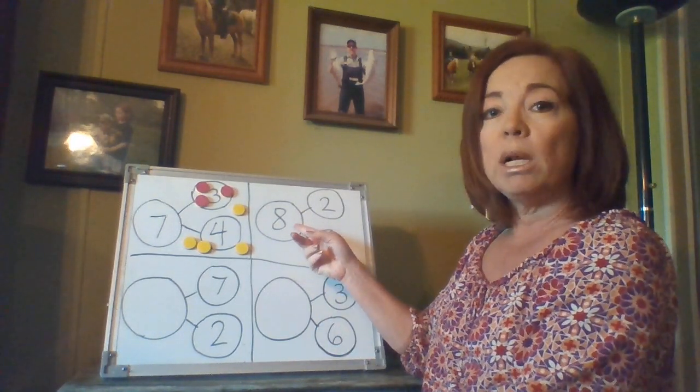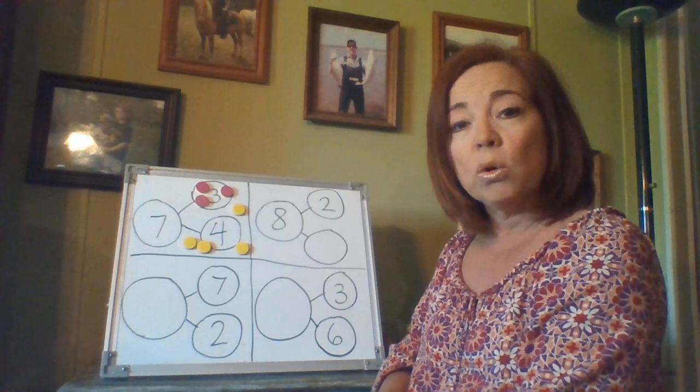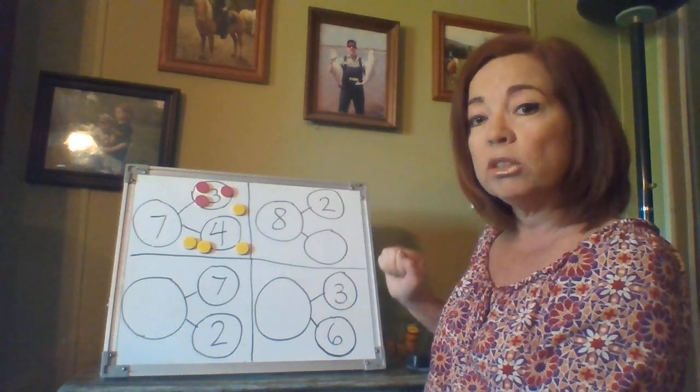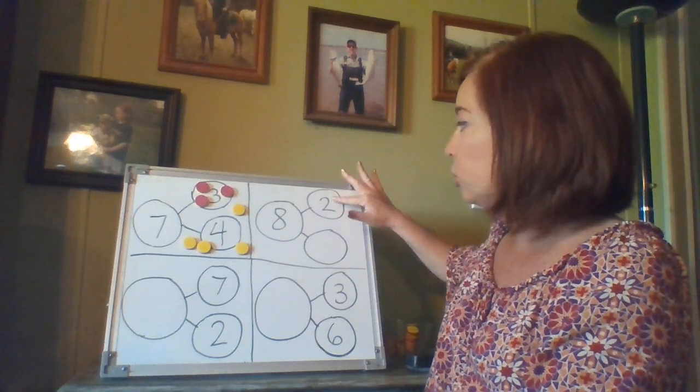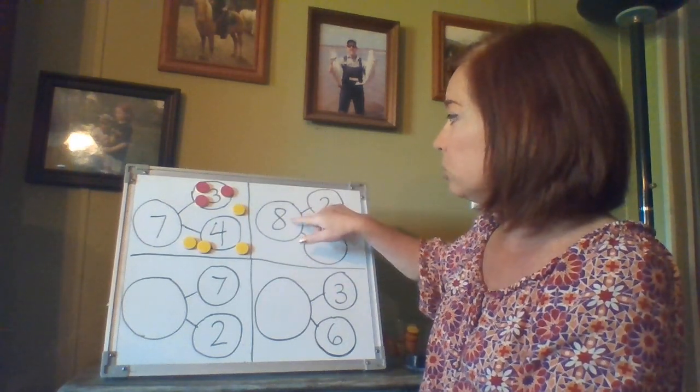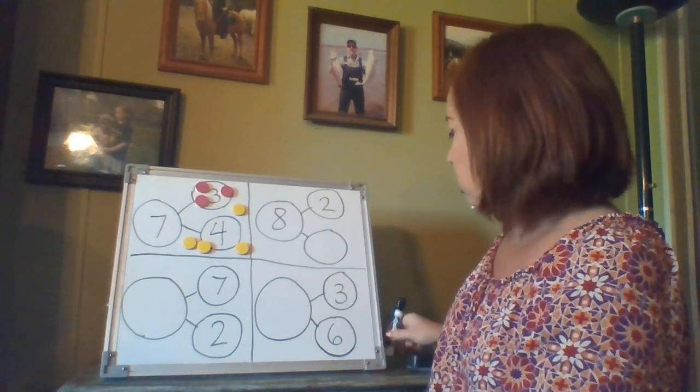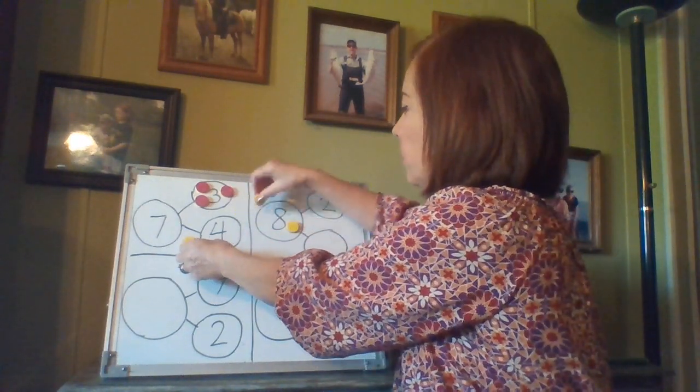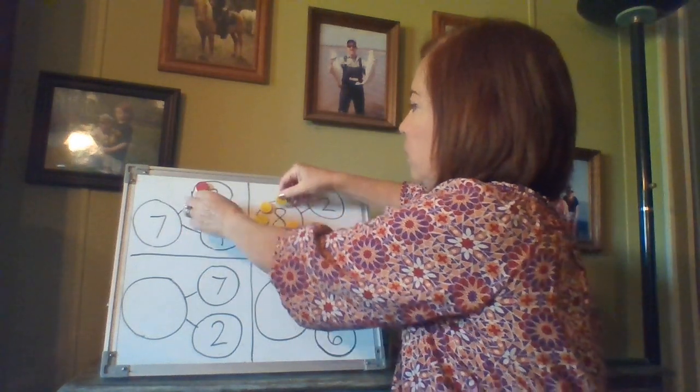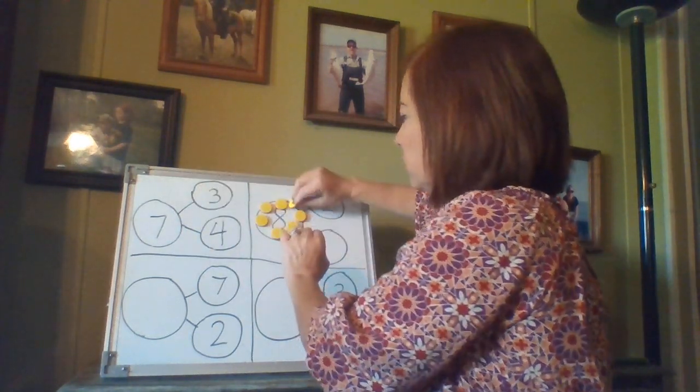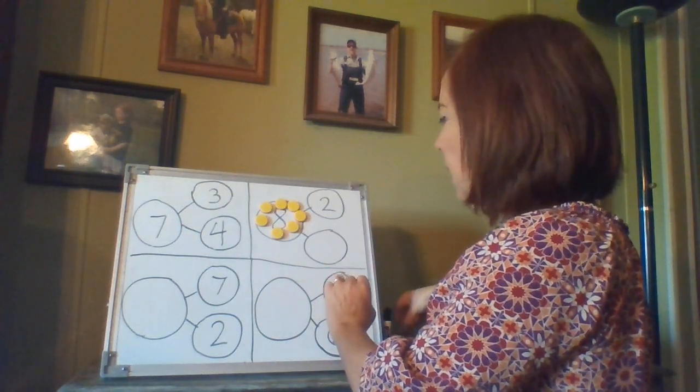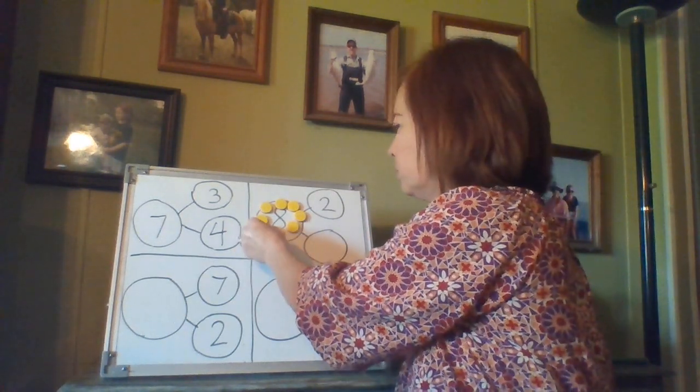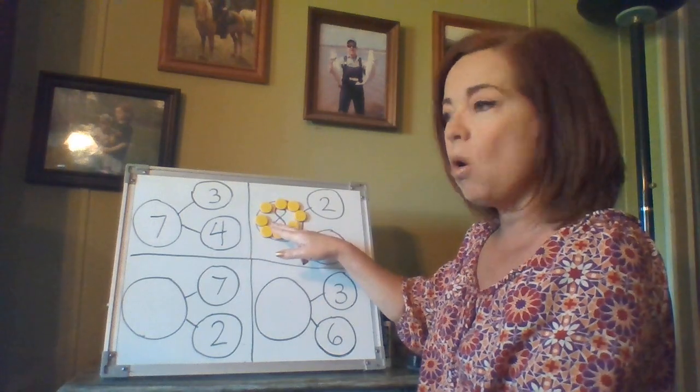The next number bond has eight as being the total. Eight is the whole. These are the two parts. So we see there's already two in that part. So we're going to start with eight. So we're going to go ahead and take these out and use them. One, two, three, four, five, six, seven, eight. It's okay if they're not fitting perfectly into the circles. Okay. So eight is my whole.